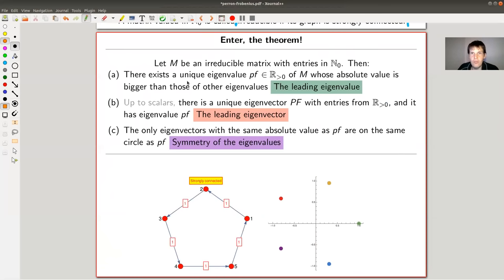And enter the theorem. So the precise statement, don't read it too much. I will narrate for you. You have this matrix, which is irreducible. And it has no negative entries. And then there exists a unique eigenvalue, a PF eigenvalue. PF is Perron and Frobenius, which is real and bigger than zero. And whose absolute value is bigger than those of any other eigenvalue. So even the absolute value. So there could be some complex roots, but the leading one will always be the biggest. And this is my leading eigenvalue, the Perron-Frobenius eigenvalue. That's already pretty amazing.